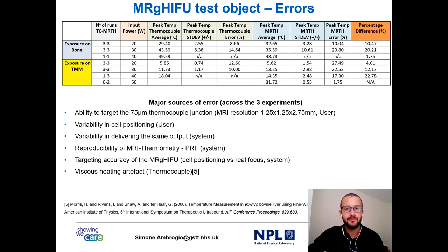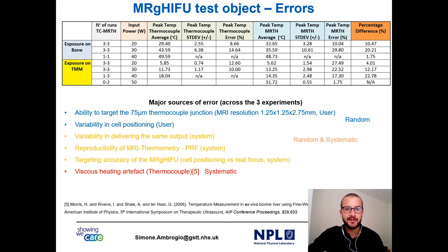If you think that these errors are quite big, actually they are not, because there are many sources of error across the experiment. These errors are both random and systematic. In particular, there is the challenge of targeting the 75-micron junction of the thermocouple, and there is the viscous heating artifact. The viscous heating artifact is due to the interaction between the ultrasound fields and the thermocouple. This error has been minimized by choosing a small thermocouple of 75 micron, which is about 5% of the wavelength of the beam, and using the second derivative method, which has been described by Morris et al.